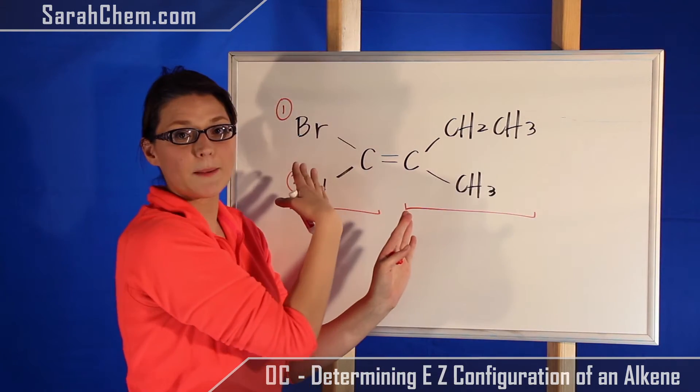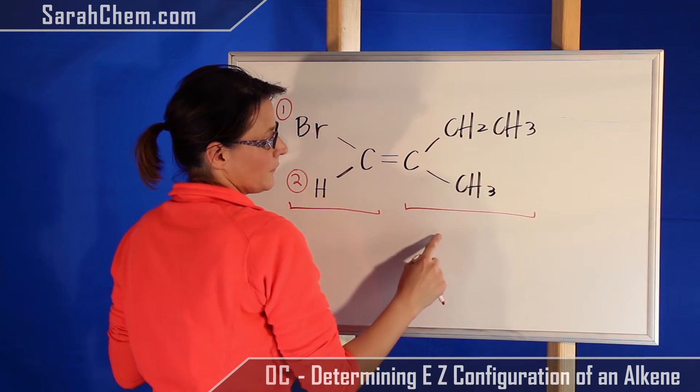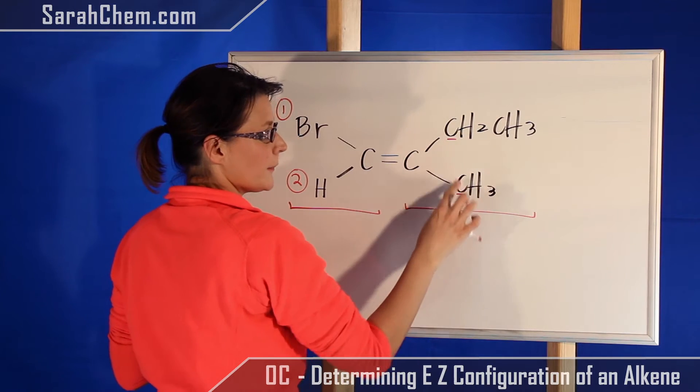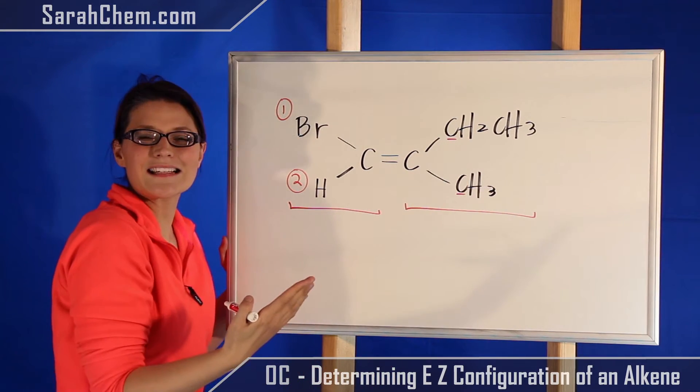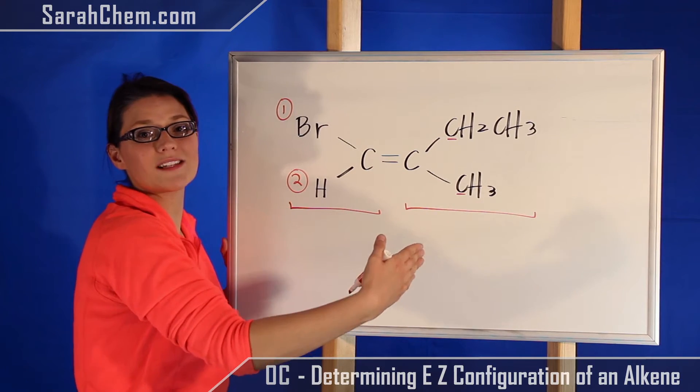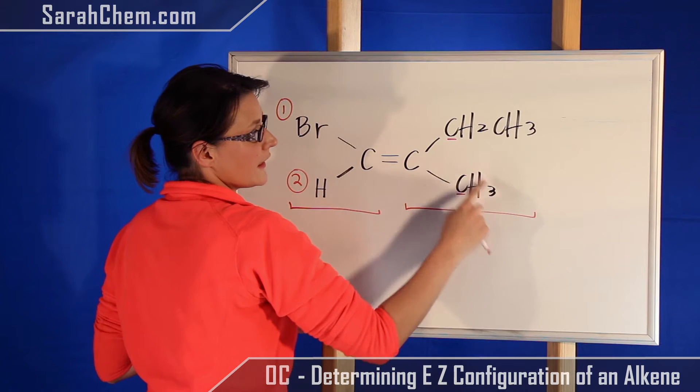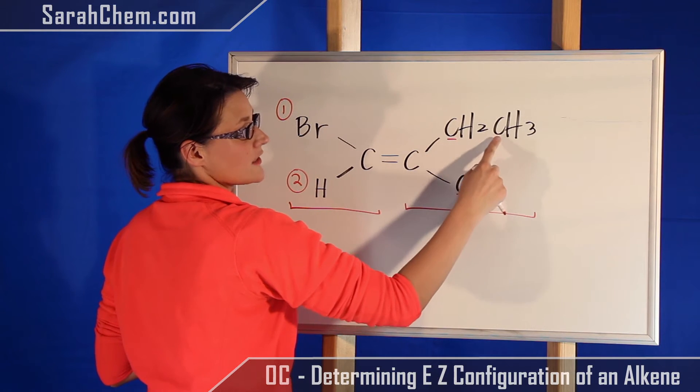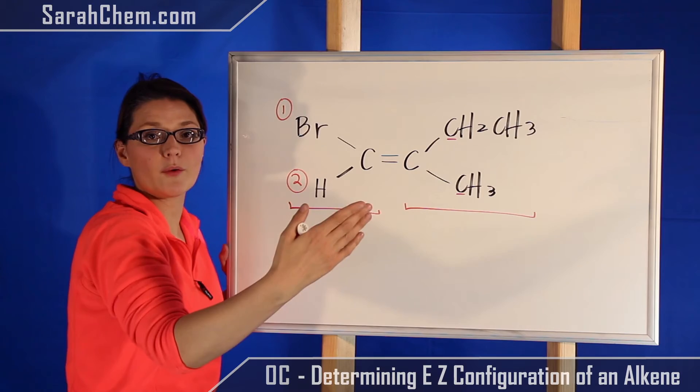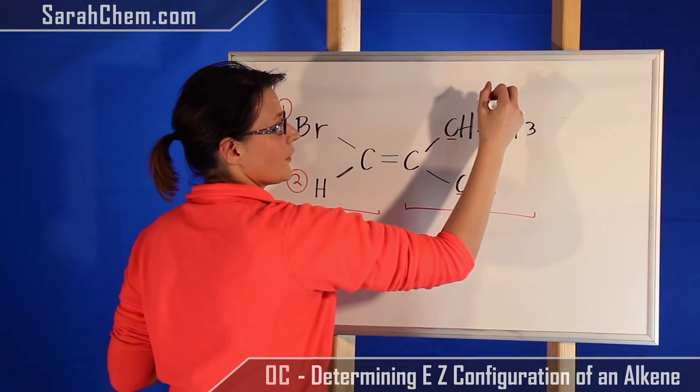look at this one completely separately from the first carbon. So now on this carbon I have a methyl and an ethyl. First we look at the immediate attachment—we have a carbon versus a carbon, so we can't indicate which one's higher priority at this point. We then branch out and see, well, what is that carbon attached to? This carbon is attached to three hydrogens; this carbon is attached to two H's and one C. This C